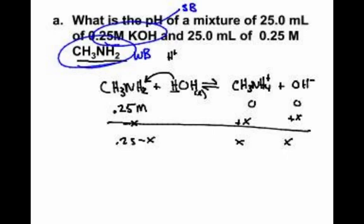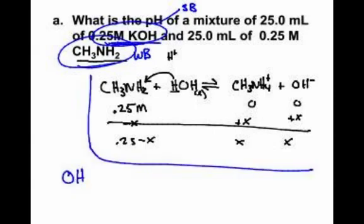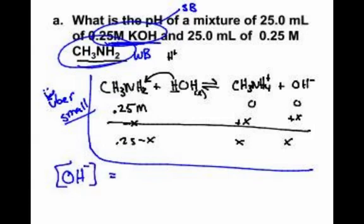What do we learn about strong acids and weak acids? Strong ones win. So if we have a 0.25 molar solution of potassium hydroxide, the amount of hydroxide from the weak base is negligible — uber small. The hydroxide concentration is a little tricky because we are mixing 25 milliliters together, so this is that division by two. If you double the volume, the concentration is cut in half. So the hydroxide concentration from the KOH is going to be 0.125.